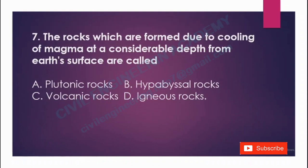The rocks which are formed due to cooling of magma at a considerable depth from the earth's surface are called: A) plutonic rock, B) hypabyssal rock, C) volcanic rock, D) igneous rock. The answer is option A, plutonic rock.